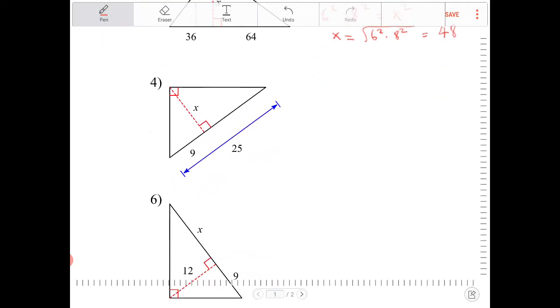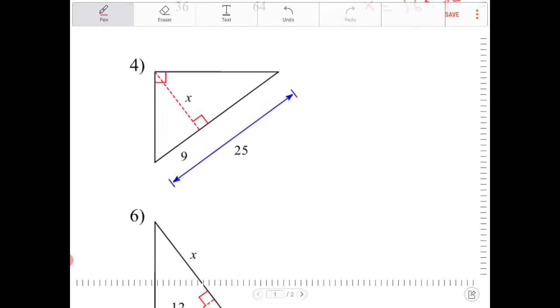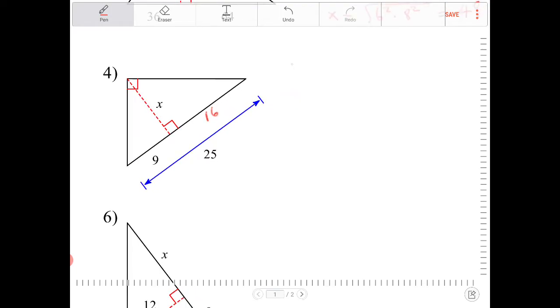Next, I have the altitude drawn from the right angle down to the hypotenuse. So therefore, that altitude will partition the hypotenuse into that geometric mean proportion, that formula. So I know that 9 and 25, if I subtract 9 from 25, I'll end up with 16. So what that translates to is 9 times 16 is equal to X squared.